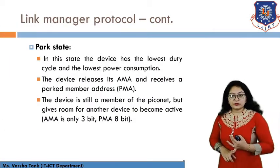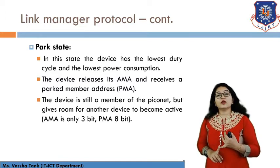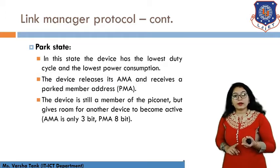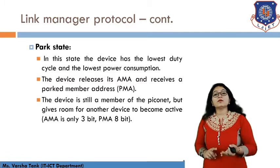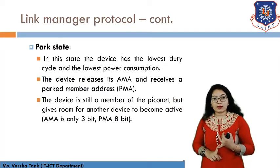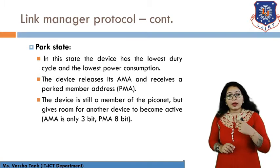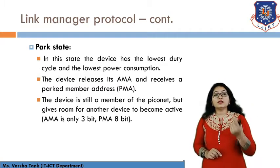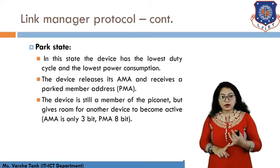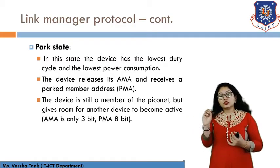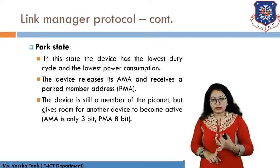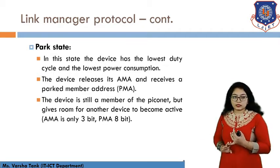The third state is the Park State, which has the lowest duty cycle and lowest power consumption. The device releases its AMA and receives a Park Member Address. When the device becomes active again, it recovers its AMA. The device remains a member of the piconet but gives room for another device to become active, allowing other slave devices to be activated.